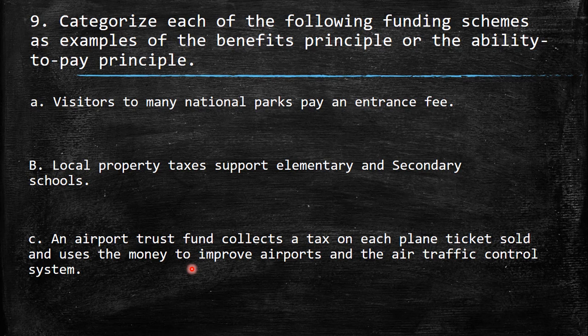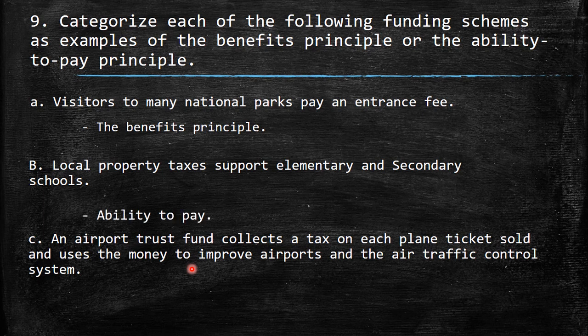The first one: visitors to many national parks pay an entrance fee — this would be the benefits principle, because you are taking advantage of the park, so you need to pay for the entrance. The second: local property taxes support elementary and secondary schools. Definitely, local property owners don't have any direct relation with these schools, but due to the ability to pay principle, they need to provide these taxes.